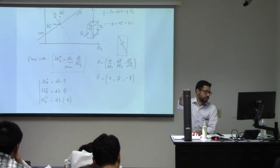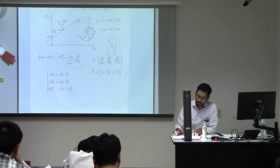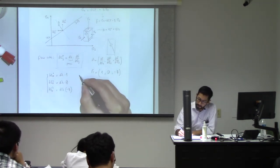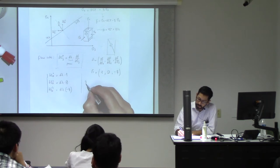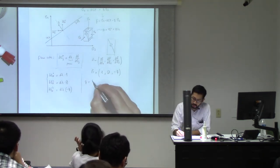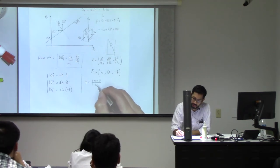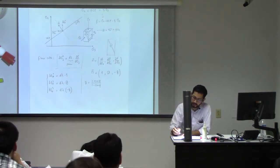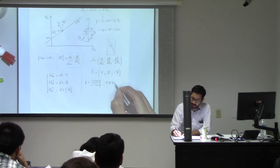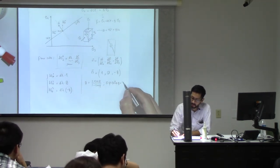Before we make another plot, recall what q was: q equals (1 + sin φ) / (1 − sin φ). If the friction angle is equal to 30 degrees, then q is equal to 3.